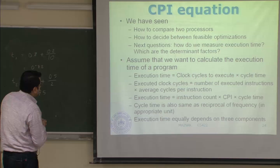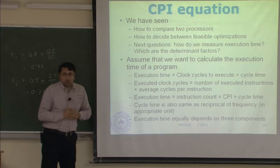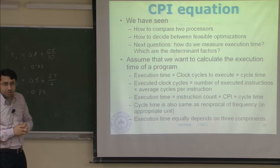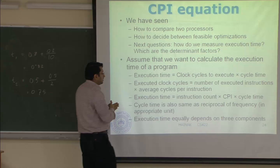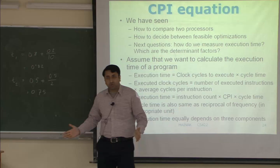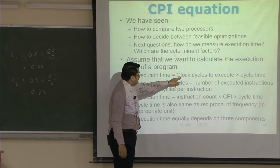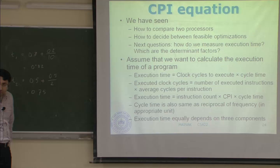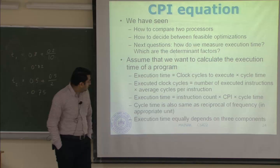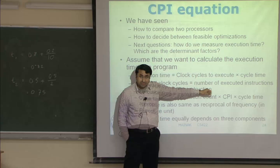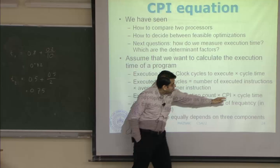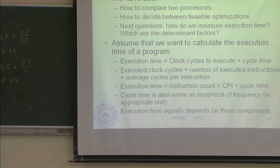The determinative factors: execution time equals clock cycles to execute multiplied by cycle time. If you take 100 cycles and your cycle time is 1 nanosecond, you require 100 nanoseconds to execute the program. Now, if I expand the clock cycles term, it equals number of executed instructions multiplied by average cycles per instruction (CPI). So execution time becomes: instruction count × CPI × cycle time. This is the CPI equation.